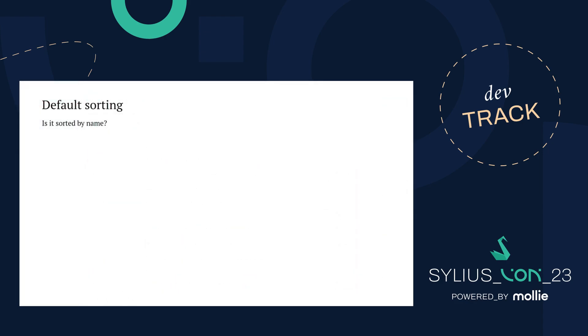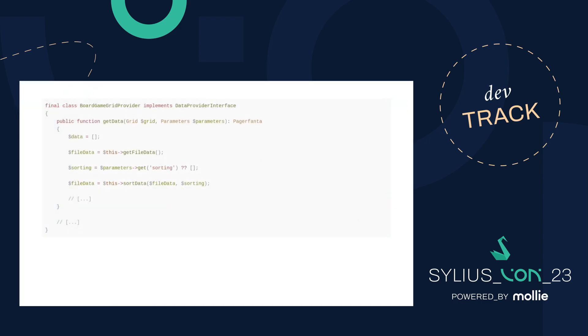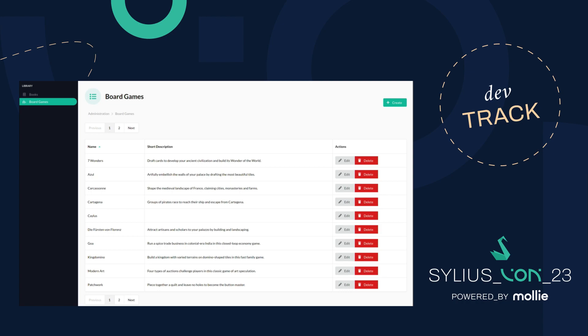There's another thing to handle: default sorting. The grid is configured to be sorted by name by default, but without a query parameter it isn't. We handle this by also checking the grid configuration for the default sorting. If there's no current sorting parameter, we fall back to the default from the grid configuration. Now our grid works correctly — sorted alphabetically in ascending or descending order as expected.